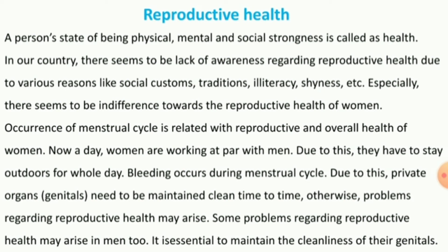Women's menstrual cycle is related to their reproductive and overall health. The menstrual cycle is very important as it is related to women's wellbeing. If women's menstrual cycle involves bleeding and functional issues, then cleanliness of private organs, i.e., genitals, from time to time is very important. Otherwise, reproductive health problems can arise.